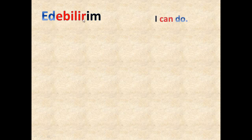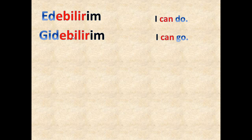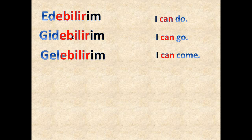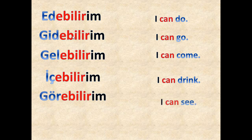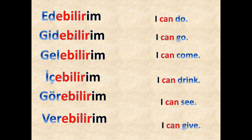Now other examples with thin vowels: 'Edebilirim' — here we have the verb 'et', but when it comes to a suffix it changes to 'd', so we get 'edebilirim', which means 'I can do'. 'Gidebilirim' — the verb is 'git', again changed to 'de' — means 'I can go'. 'Gelebilirim' means 'I can come'. 'İçebilirim' means 'I can drink' or 'I may drink'. 'Görebilirim' means 'I can see' or 'I may see'. 'Verebilirim' means 'I can give' or 'I may give'.